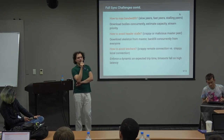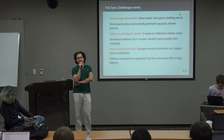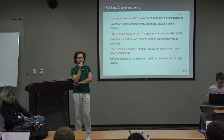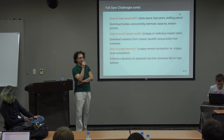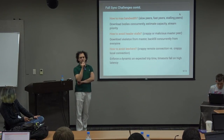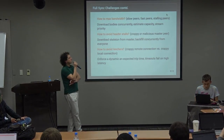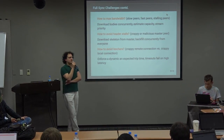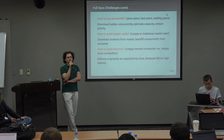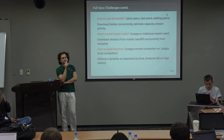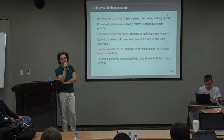If my download queue holds 1000 headers and a slow peer occupies 100 of those slots, I have to wait for it to finish before I can process that batch — and this repeats every queue cycle. Essentially my effective latency becomes the latency of my slowest peer. That's a real problem.